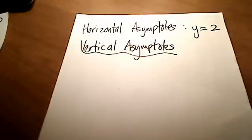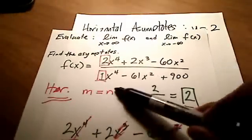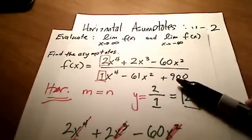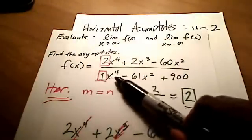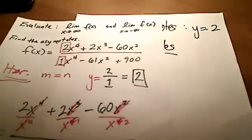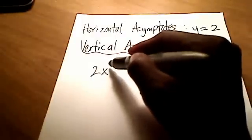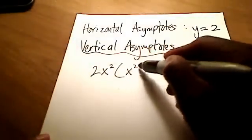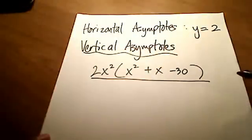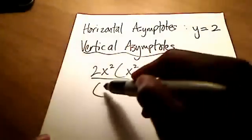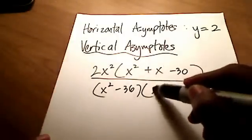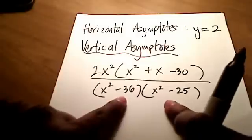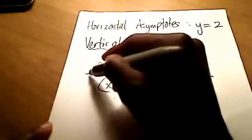To find the vertical asymptotes, going back to the original problem, I need to find what value or values of x make the denominator 0. It's not easy to see right away, but if I factor everything in the numerator and denominator as much as possible, these terms in the numerator all have 2x squared in common, leaving x squared plus x minus 30. The three terms on the bottom factor into x squared minus 36 and x squared minus 25.